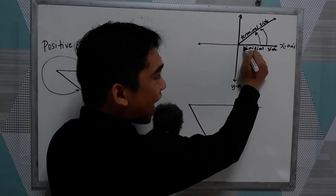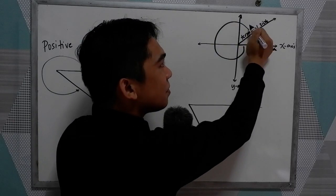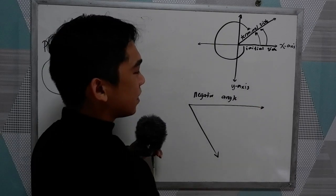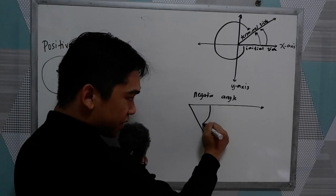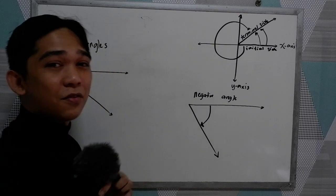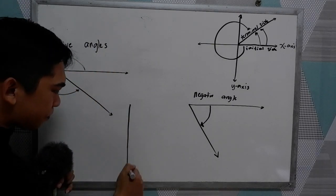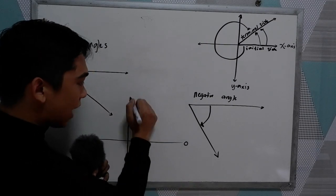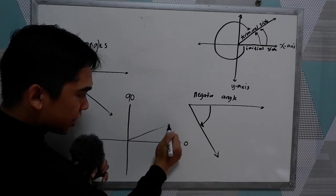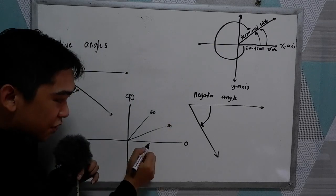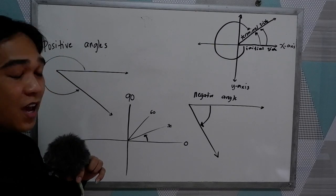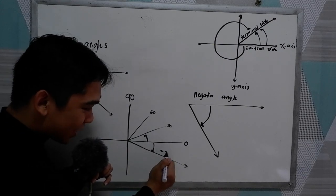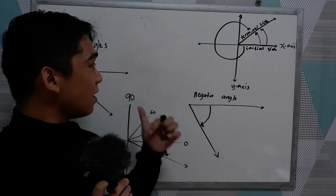Likewise, if this is our initial side and we go clockwise to our terminal side, that will give us a negative angle. So this is an example of a negative angle. If we locate positive 30 in our Cartesian plane — we know that 0 is here and 90 is here — positive 30 is here. And if we locate negative 30, of course clockwise, negative 30 is here.